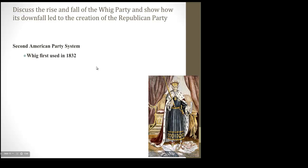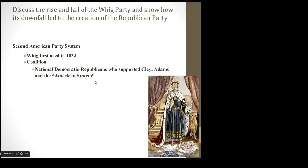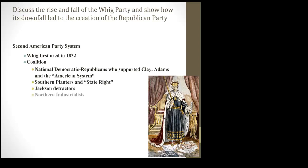The second American party system established itself with the rise of the Whig Party, first established in 1832. Basically, the Whig Party is a coalition formed to oppose Andrew Jackson. As people began to love to hate Andrew Jackson — stemming from his problems with Calhoun and Clay — the coalition came from national Democratic-Republicans who supported Clay and Adams's American System, southern planters and states' rights advocates, and northern industrialists alarmed at what was happening to the economy under Jackson.